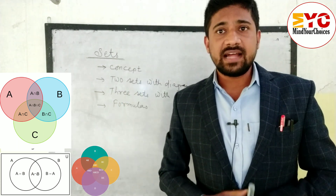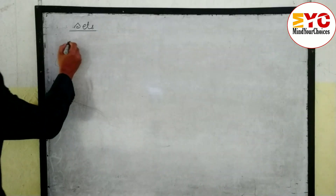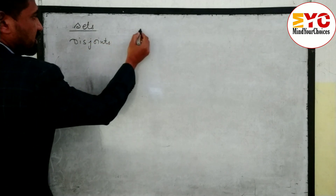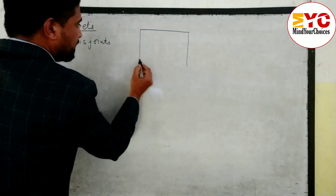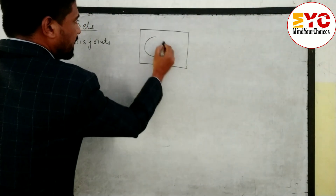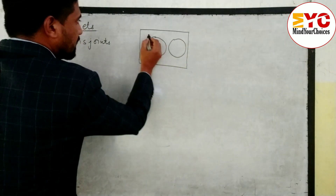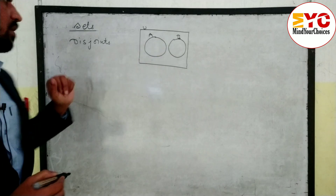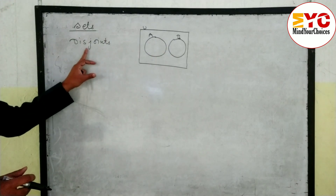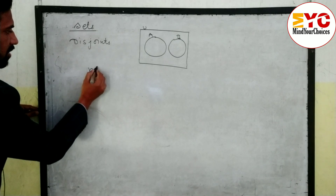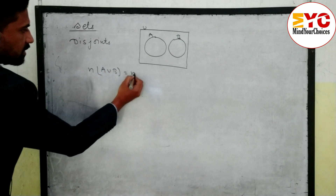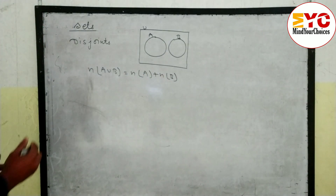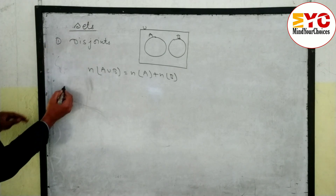Let's start without any delay. First: disjoint sets. When sets are not joined — as you can see in the diagram — there are no common elements between two sets A and B. When none of the elements are common, it is known as a disjoint set. The formula for n(A∪B) is equal to n(A) plus n(B).